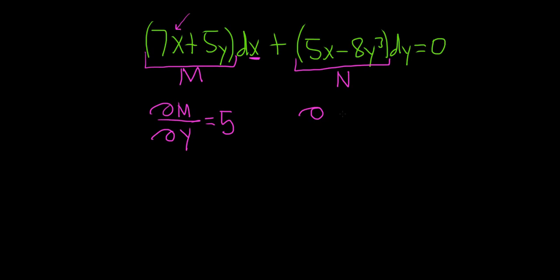Over here we compute del N del, and again it's the other variables, so x. The derivative of 5x is 5 and the derivative of 8y cubed is 0 because it's a constant. These partial derivatives are equal, so that means the differential equation is exact.